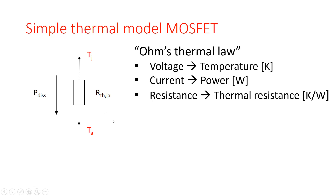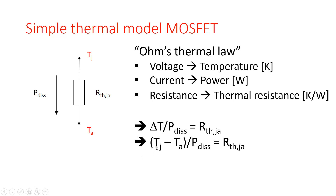Knowing that, we can say that the delta T — the temperature across the thermal resistance — divided by the power flow, is equal to the thermal resistance between the junction and the ambient (RTH_JA). The temperature across the thermal resistance equals the junction temperature minus the ambient temperature. So the equation states that the junction temperature minus the ambient temperature, divided by the dissipation power, equals the thermal resistance between junction and ambient. Therefore, the junction temperature equals the ambient temperature plus the dissipated power times the thermal resistance between junction and ambient.